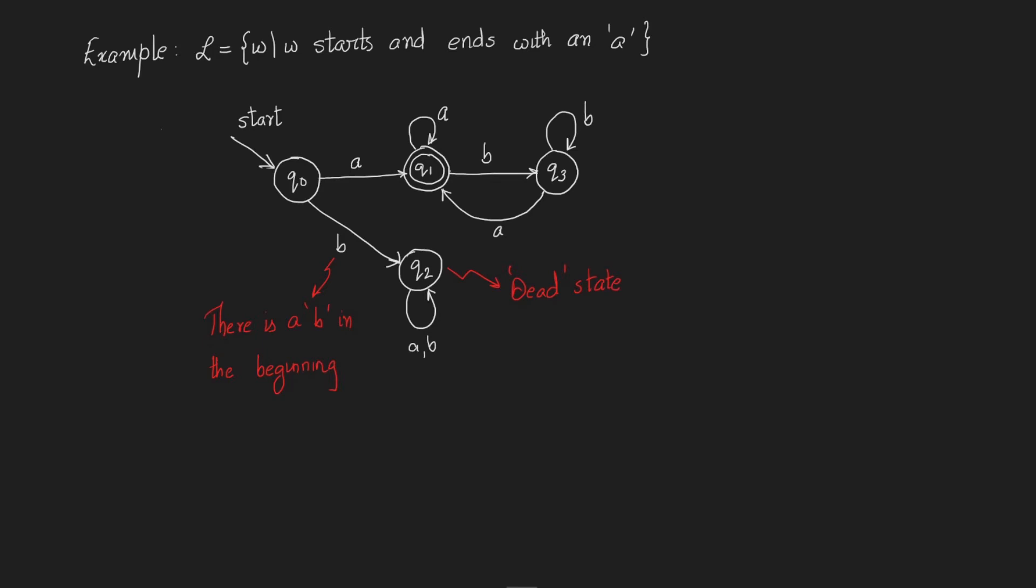q3 indicates that you are in the middle of the string and you have not seen an A as the last symbol. In this particular case, the last symbol seen was a B.